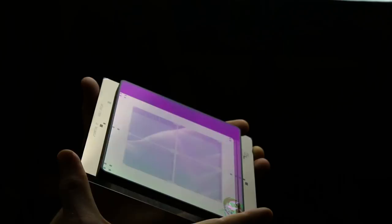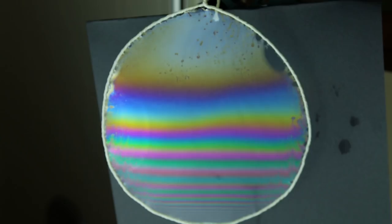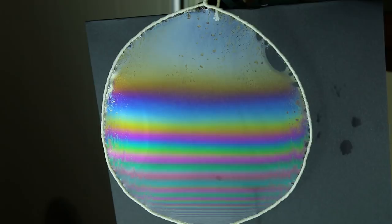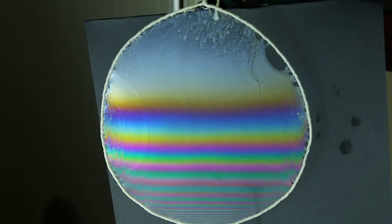However, we can also see that the interference will depend on the thickness of the film. To prove this, I created this two-dimensional soap film and hung it vertically. We can clearly see that the color of light being reflected depends on the height of the film. That's because gravity pulls on the fluid in the film, causing it to be thicker at the bottom and thinner at the top.